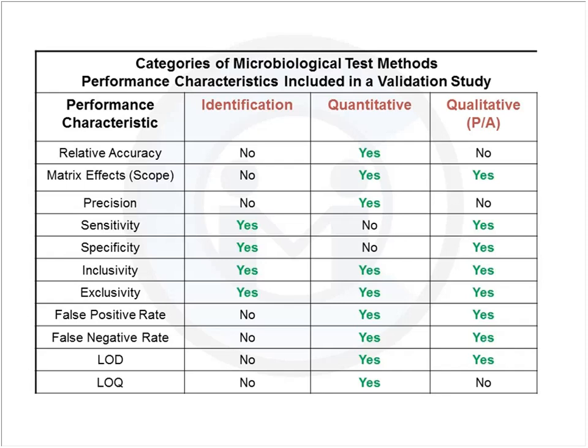Although sensitivity and specificity are not the primary focus for quantitative methods, we are looking at false positive and false negative rates when the targets themselves are not being detected properly. Limit of detection and limit of quantitation are somewhat applicable. For qualitative methods, relative accuracy is no longer the applicable term — in microbiology, we recognize that we never have an absolute answer.